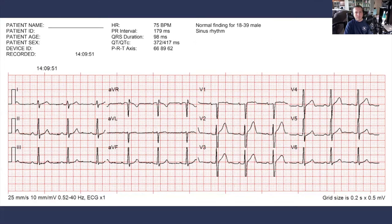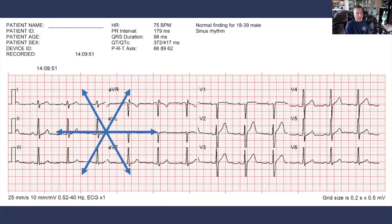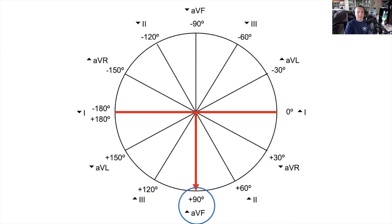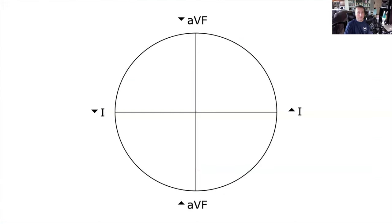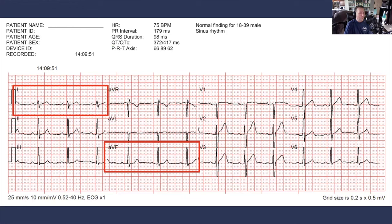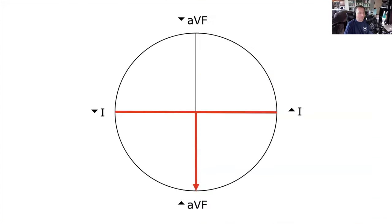Let's look at another one. What is the most equiphasic lead of the first six leads? Lead I. What is the perpendicular lead using the star-of-life method? It's lead AVF. Because AVF is positively deflected, using the hexaxial reference system, we know the electrical axis in the frontal plane is pointing straight down toward the patient's feet at 90 degrees. The computer measures this at 89 — only off by one degree. Once again, we'll have difficulty using the quadrant system here because we have an equiphasic lead on one of the two spokes, pointing straight down at the positive electrode, so we can't really classify this as being in one quadrant.